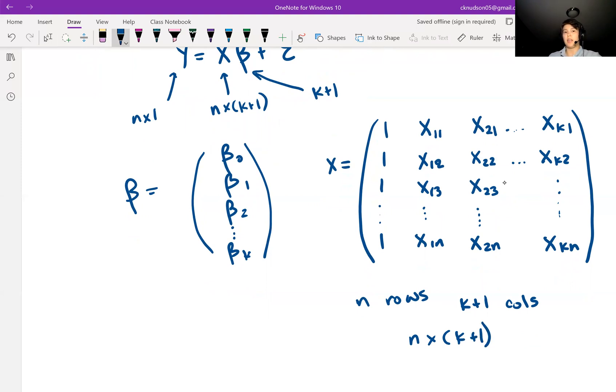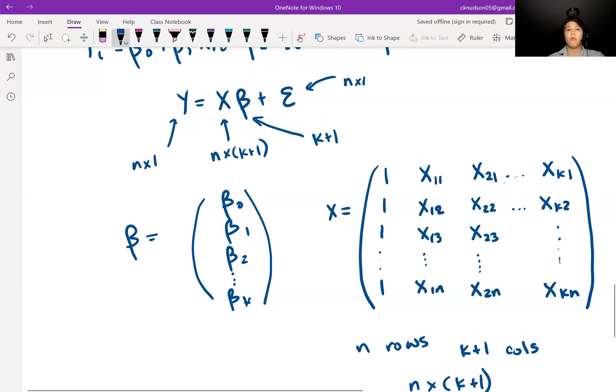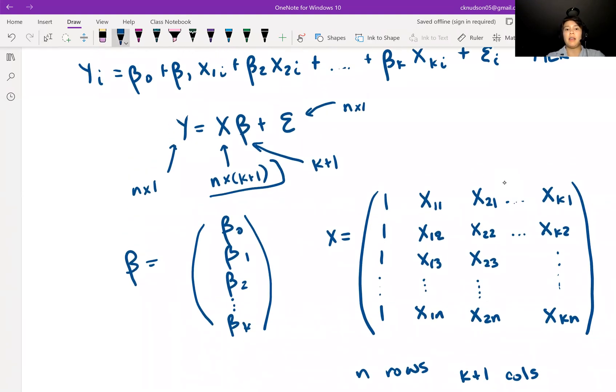So we can see that x is n by k plus 1. So beta is k plus 1, x has dimension n by k plus 1. So when we multiply n by k plus 1 with a k plus 1, then we get n by 1. And then, of course, epsilon also has to have dimension n by 1. So this is how we write our regression equation.